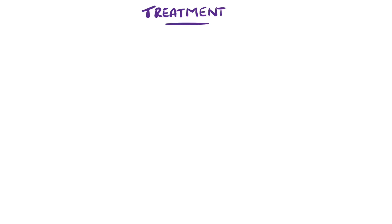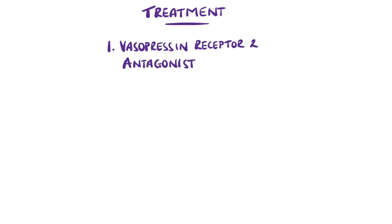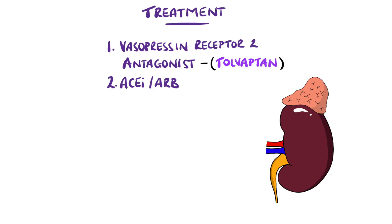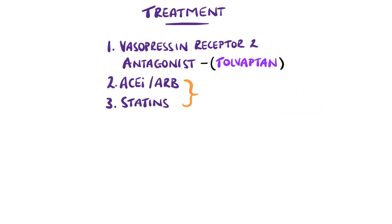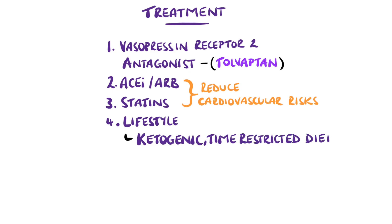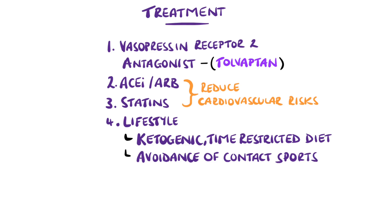Tolvaptan, which is a vasopressin receptor 2 antagonist, has been shown to have a beneficial effect on renal function. ACE inhibitors and angiotensin receptor blockers can be used to interrupt the renin-angiotensin-aldosterone system and reduce hypertension, which helps reduce the risk of cardiovascular complications. Linked to this, statins may also be started. Lifestyle changes have some evidence of being beneficial, like a ketogenic and time-restricted diet, and it's also recommended to avoid contact sports. Antibiotics are regularly used because the cysts can produce a breeding ground for bacteria.